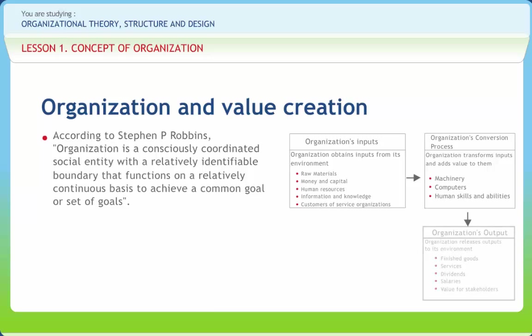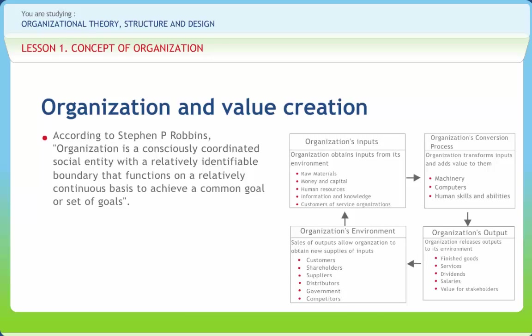Stage 3 is the organization's outputs. Output of finished goods and services is released into the environment where they are purchased by customers to satisfy their needs. Then the organization's environment: the sale of output allows the organization to obtain new supplies of inputs. Value creation is a product or service that provides value to the customer, which sets your company apart from the competition. In the event that you can bundle other products or services that your competition can't, you have created more value.